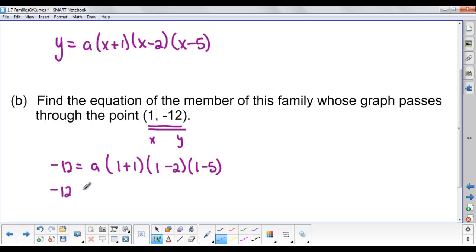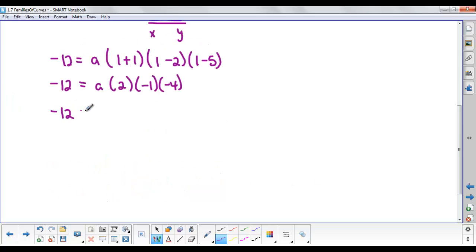Simplify and solve for a. So 2, -1, and -4. That gives us 8a on the right side. Divide both sides by 8, so that gives us -12/8 for our a value. Don't forget to reduce, so that gives us -3/2 for our a value. Therefore, the equation is y = -3/2(x+1)(x-2)(x-5). And there we go.